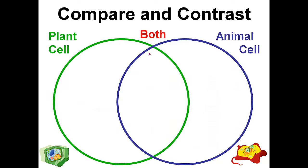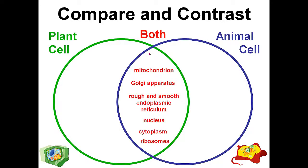Finally, we identified the common cell parts found in both animal and plant cells: mitochondria, Golgi apparatus, rough and smooth endoplasmic reticulum, the nucleus, cytoplasm, and ribosome — these are the cell parts common to both animal and plant cells.